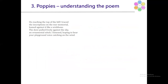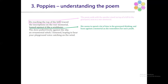Towards the end of the poem: on reaching the top of the hill, I traced the inscriptions on the war memorial, leaned against it like a wishbone. The dove pulled freely against the sky, an ornamental stitch. I listened, hoping to hear your playground voice catching on the wind. The poem ends with the speaker on top of the hill next to the war memorial. She seems to spend a lot of time there, thinking, leaning against the memorial as she remembers her son's youth. She remembers the carefree way he used to sound as a child — she longs for, she yearns for that time.